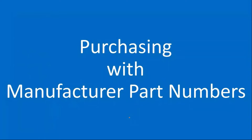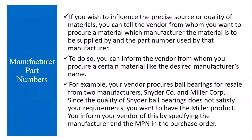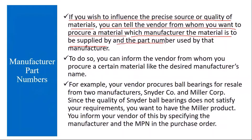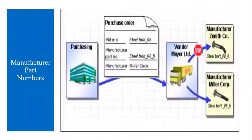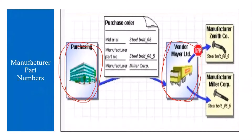First, let's understand what manufacturer part number purchasing is. If you wish to influence the precise source or quality of materials, you can tell the vendor from whom you want to procure a material, which manufacturer the material is to be supplied by, and the part number used by that manufacturer. For example, you are purchasing a metal from a vendor, but that vendor is purchasing the material from two different manufacturers. Here, we are a company purchasing the material from a vendor.